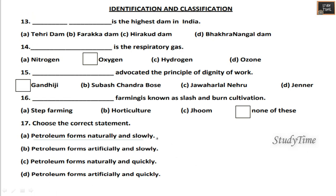Identification and Classification section. Dash is the highest dam in India — it is Tehri Dam. Dash is the respiratory gas — it is oxygen. Dash advocated the principle of dignity of work — it is Gandhiji. Dash farming is known as slash and burn cultivation. Choose the correct answer: petroleum forms naturally and slowly.